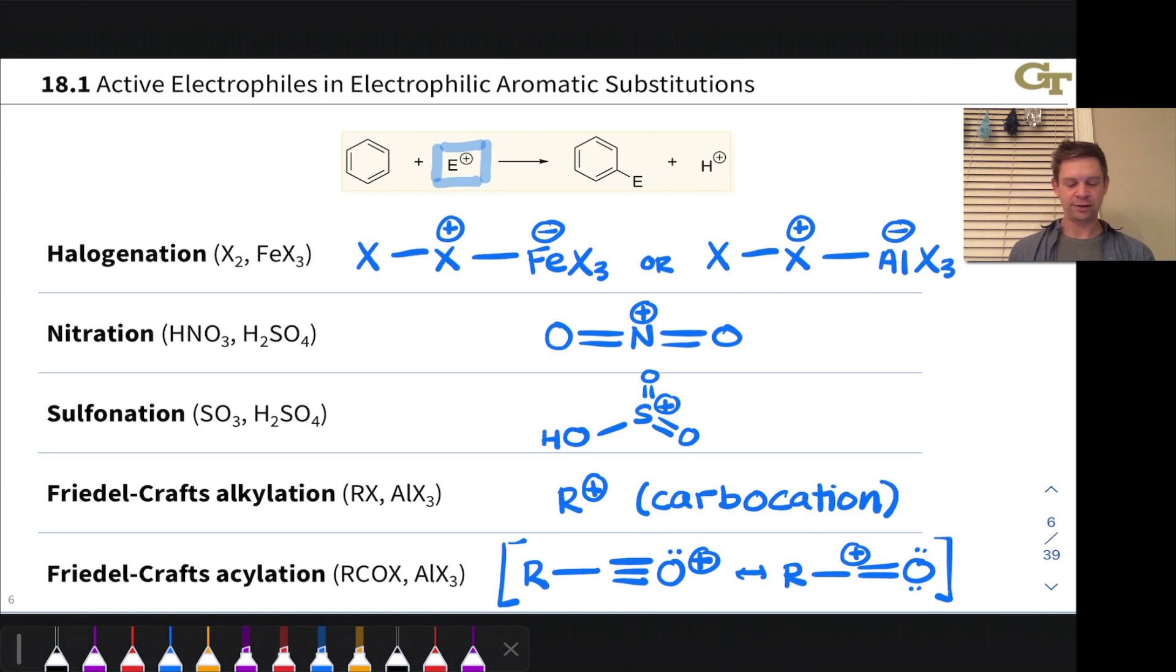In nitrations, we're going to generate the NO2 cation, whose Lewis structure is right here. This helps drive home the point that it's analogous to CO2, just with an extra proton. The SO3H cation, one way of drawing that Lewis structure, is right here. And this is extremely electrophilic at the sulfur atom.